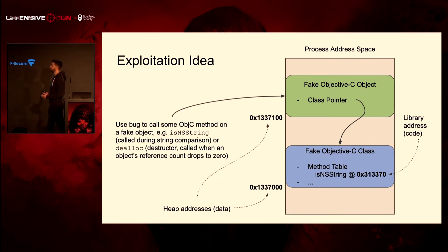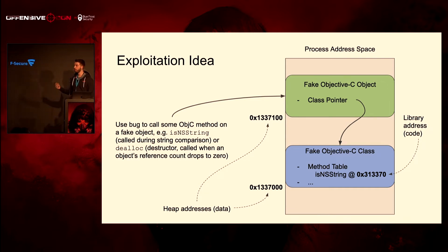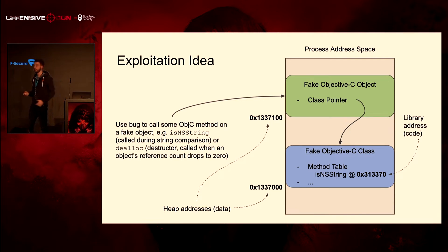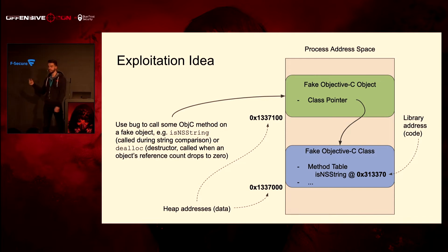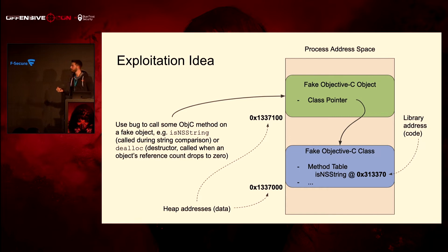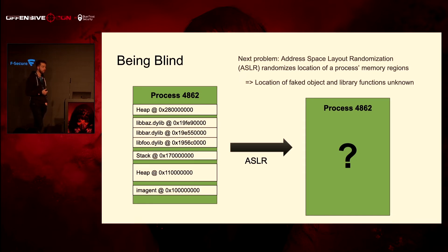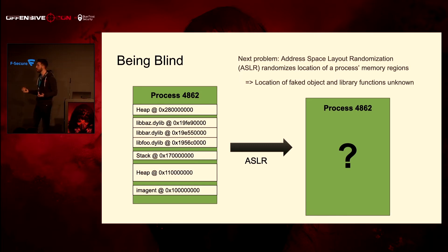How do you exploit this kind of bug? Basically, you need to create some kind of fake object and have that object be used. This pointer being read is treated as a pointer to an Objective-C object, and methods will be called on it — so it's exploitable if we can fake these. In particular, it will call something like isNSString on it. So you'd fake an Objective-C object with a class pointer that points to a fake Objective-C class, and that class has the function pointers that will be called, giving you code execution.